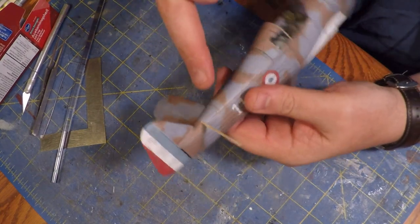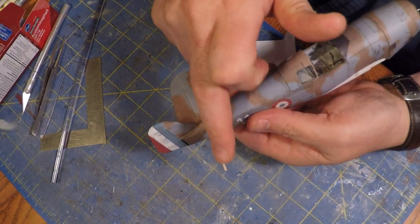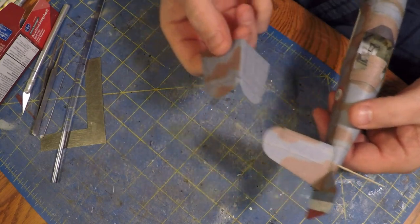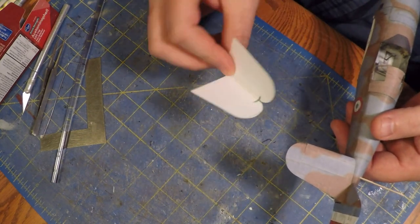Alright, putting the stabilizer on. Off camera, there's a cardboard spar. I cut out the little squares on the top of the fuselage and slipped it right in and glued it.